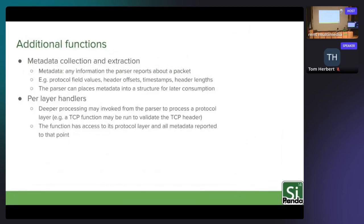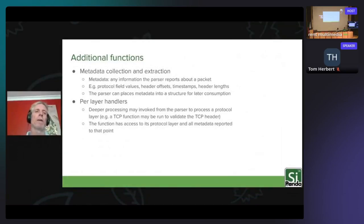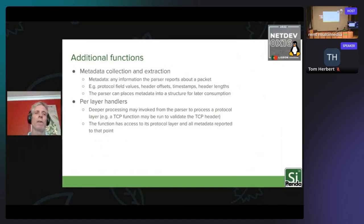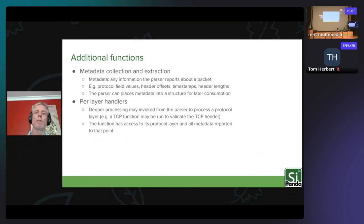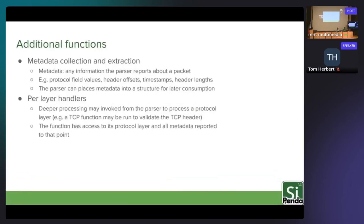We need parsers to do useful work. By parsing they validate the packet to some extent, but we also want to derive information as we parse — this is called metadata collection and extraction. Metadata is any information derived from the packet headers or contents, including things like protocol field values such as IPv4 and IPv6 addresses, header offsets, timestamps, and header lengths. The parser creates this metadata by pulling fields from the packet or from the parsing process itself, and puts it into a structure that will be consumed downstream.